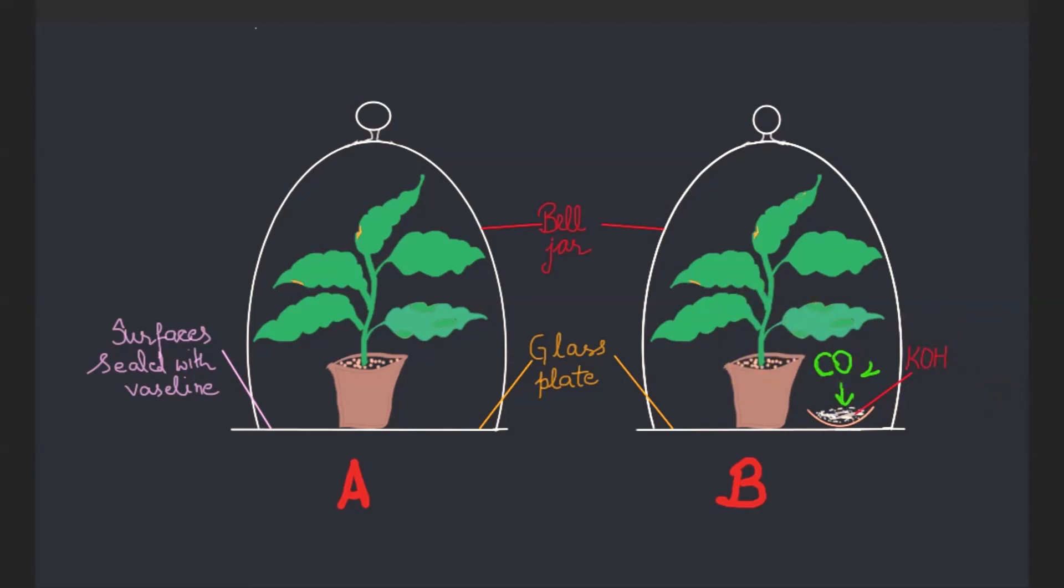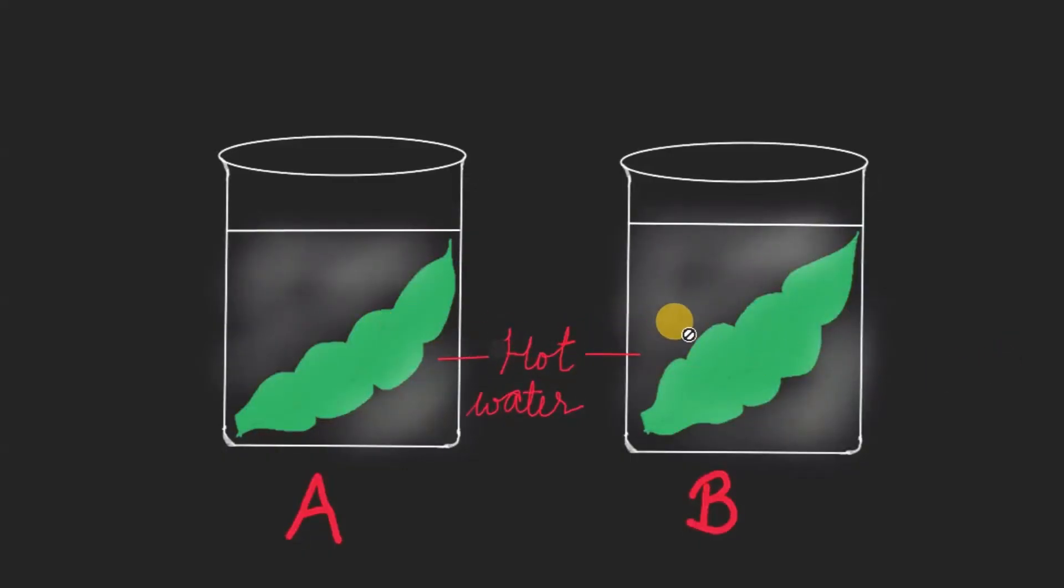After some time, now we will take the leaves from these plants. And what we will do? We will keep these leaves in boiling hot water, and then again, like in the previous experiment, we will shift these leaves into beakers containing alcohol.